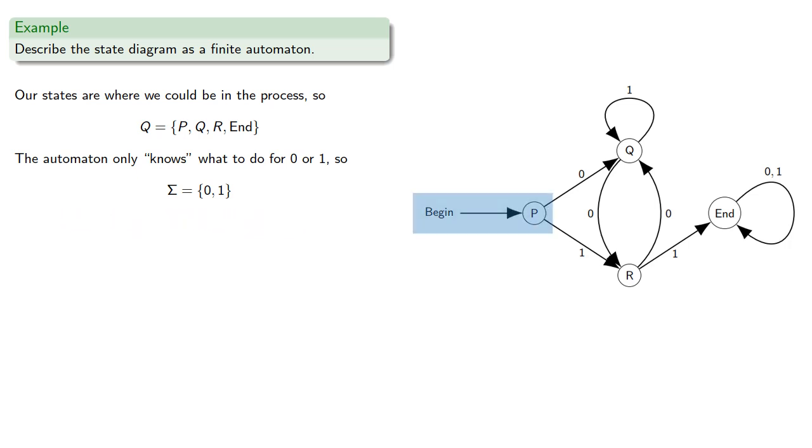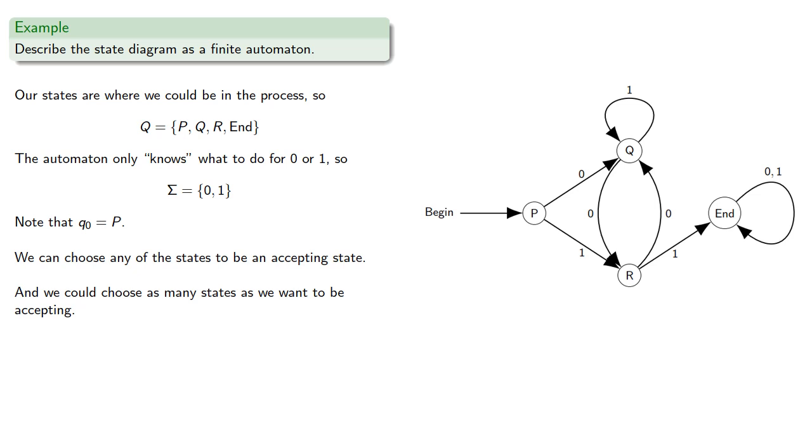We begin at state P. Now, we can choose any of the states to be an accepting state, and in fact we could choose as many states as we want to be accepting. In principle, all states could be accepting. For this example, we'll make the obvious choice and have just a single accepting state, which would be END.